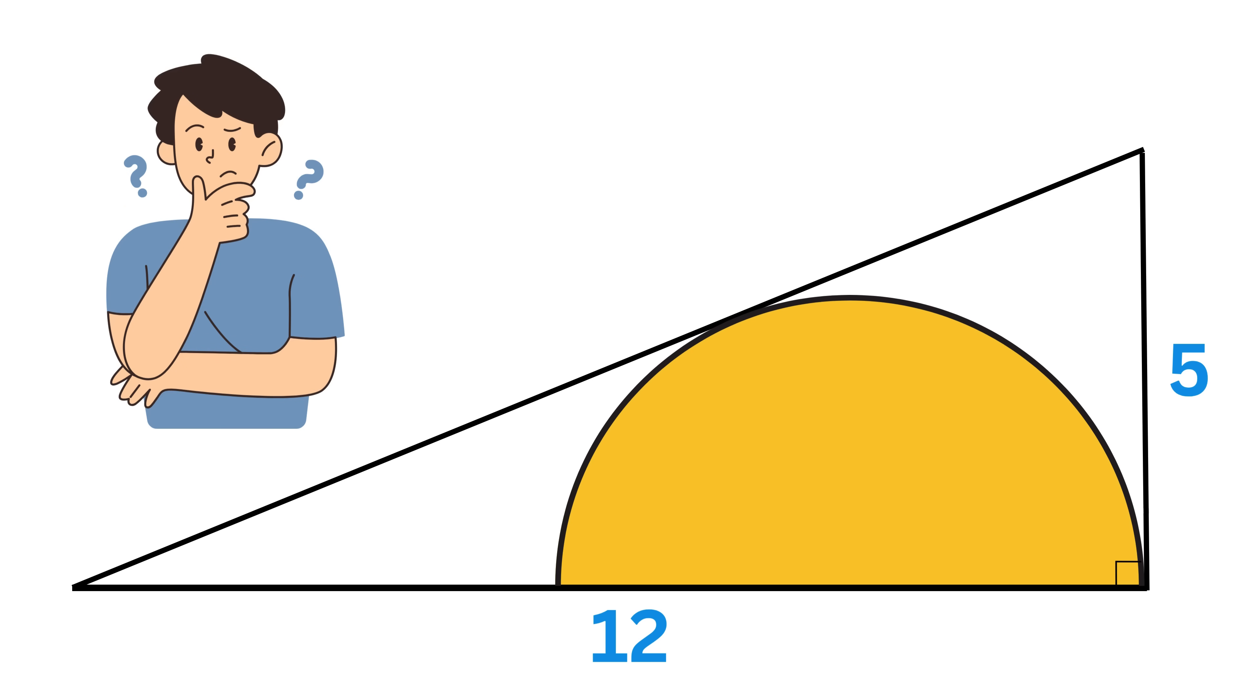What could be our starting point? As a first step, assume the center of this semicircle is somewhere here on this side of the triangle. Now let the radius of this semicircle be labeled as R.